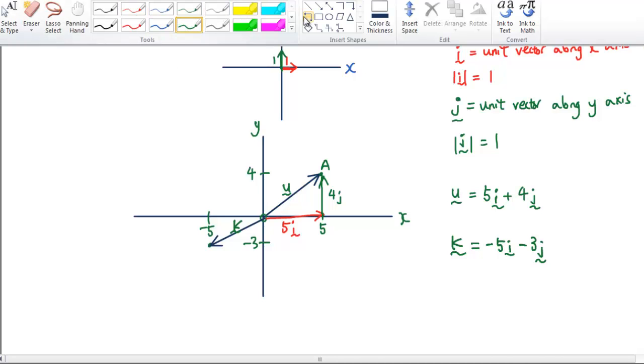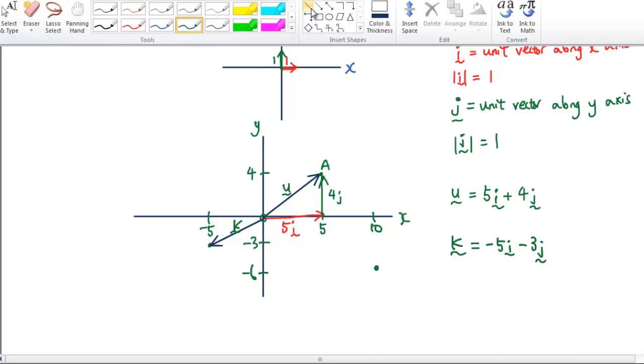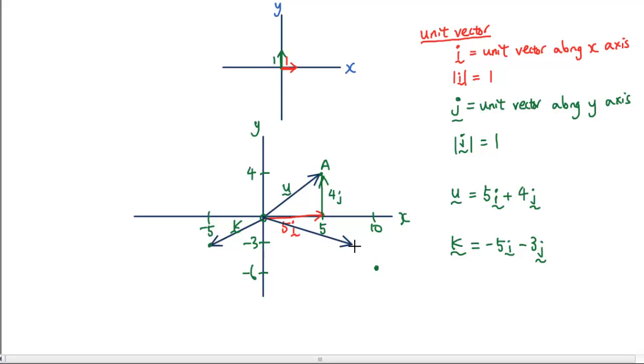If you really want to practice, I'm going to give you another point. Let's call this 10 and negative 6. The vector joining this point, I'm going to call vector q. I want you to write down what vector q is in terms of i and j. And therefore it will be 10i minus 6j. Hopefully you guys understand position vectors now.